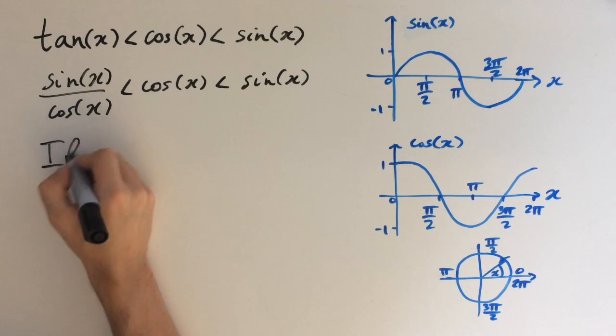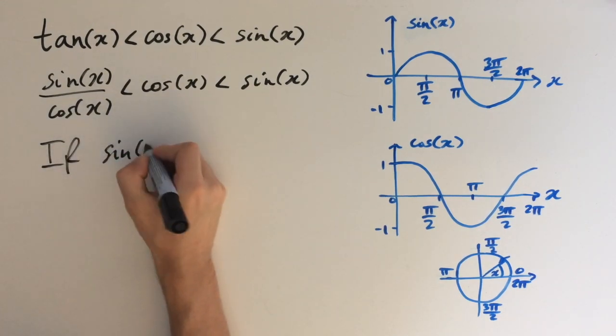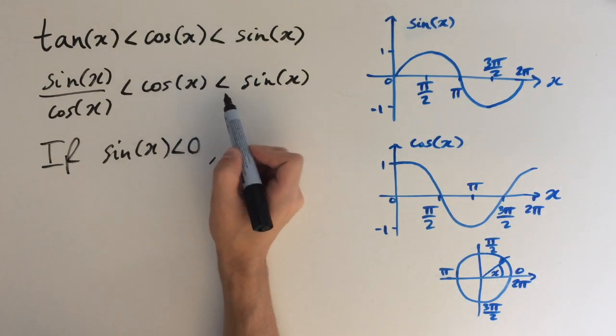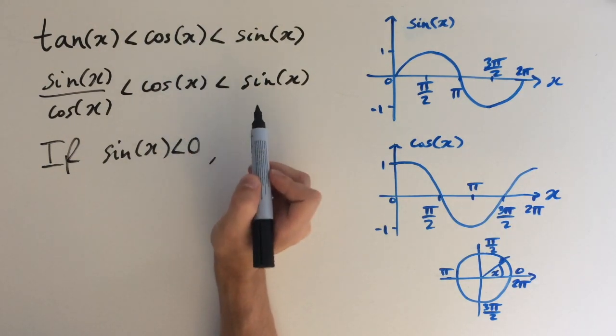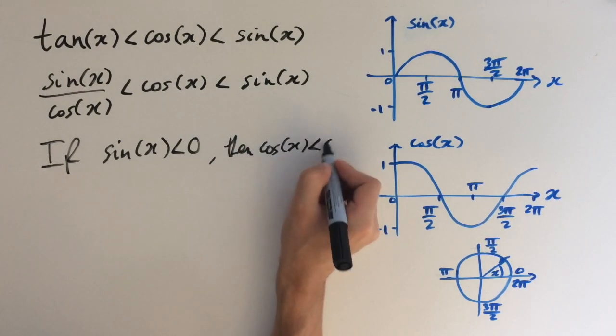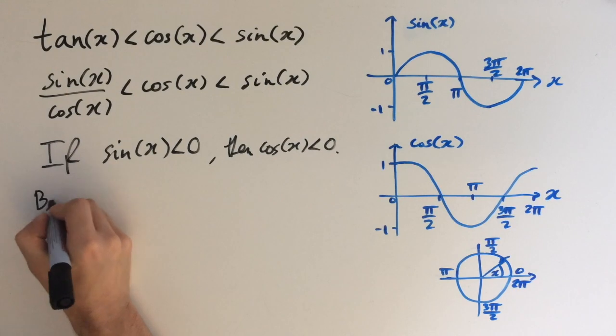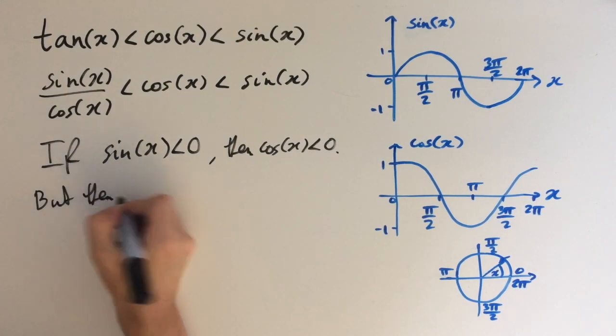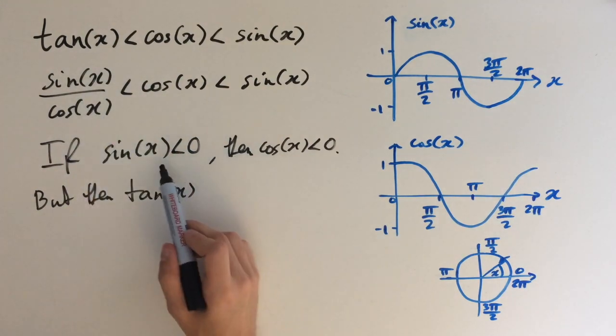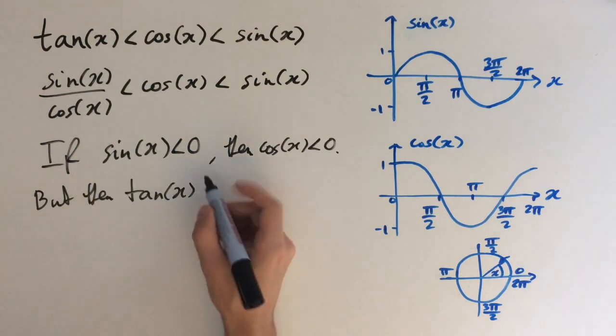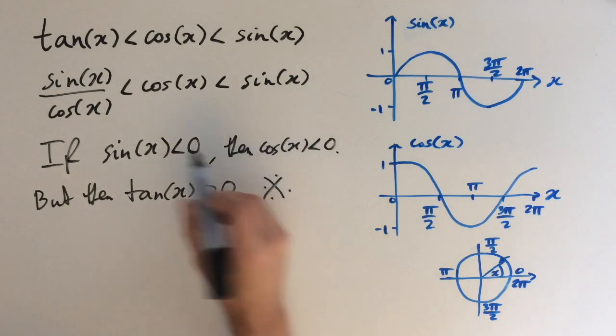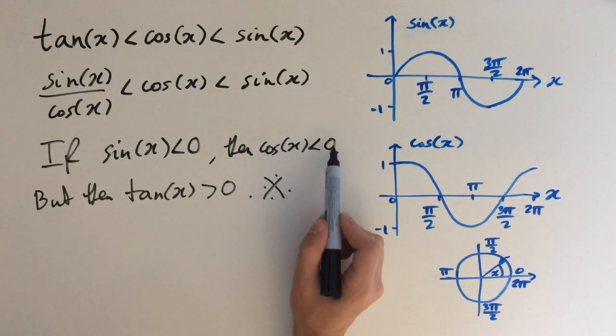Now let's suppose sin(x) is negative. If sin(x) < 0, then by our inequality this would force cos(x) to also be less than 0, because cos(x) < sin(x). But then tan(x), which is the ratio sin(x)/cos(x), would be positive if both are negative. But this is a contradiction because tan(x) < cos(x) < 0, so this can't be true.